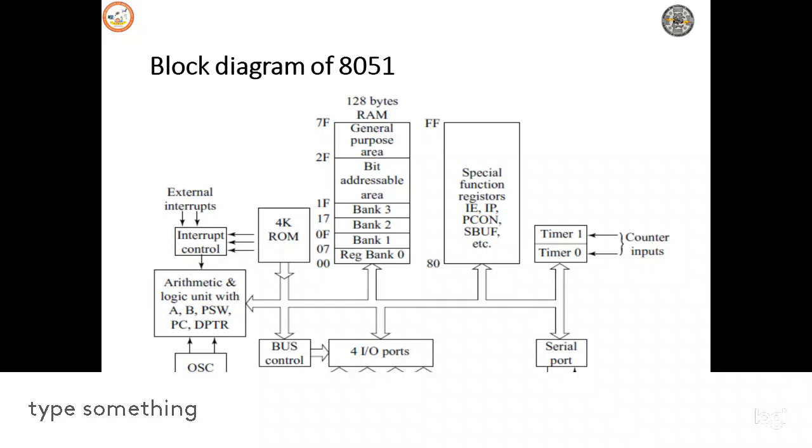In serial communication, whenever you need any data which has to be sent to the output devices through the microcontroller, we can use this serial port. It is having four input and output ports, that is P0, P1, P2 and P3, and it has 4K ROM.